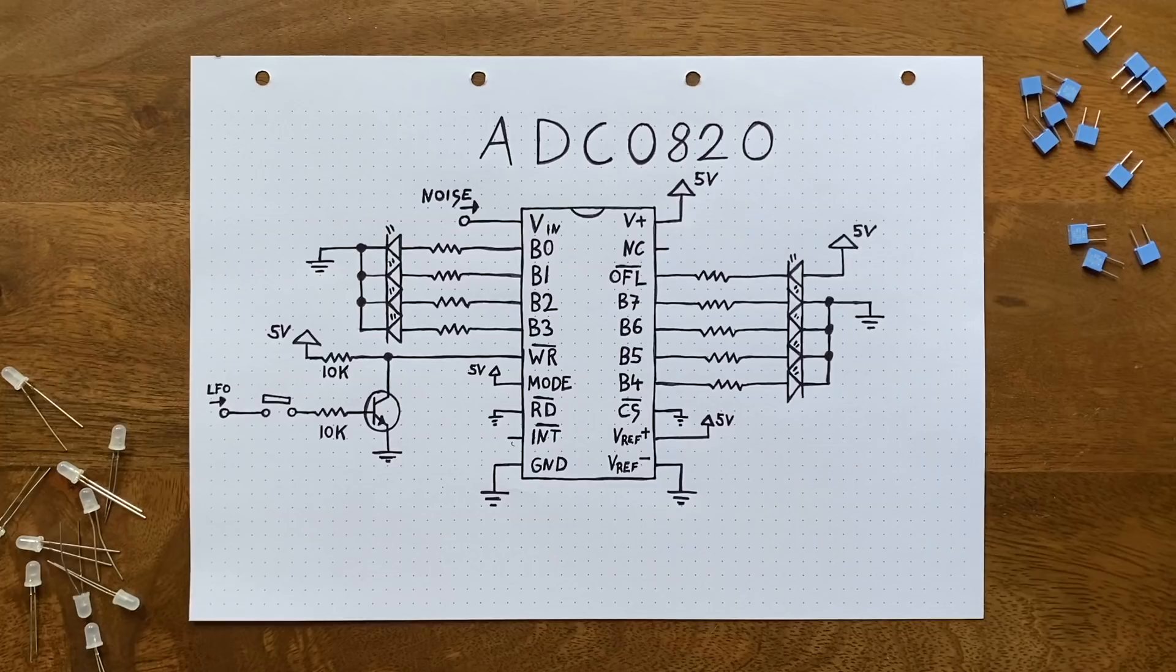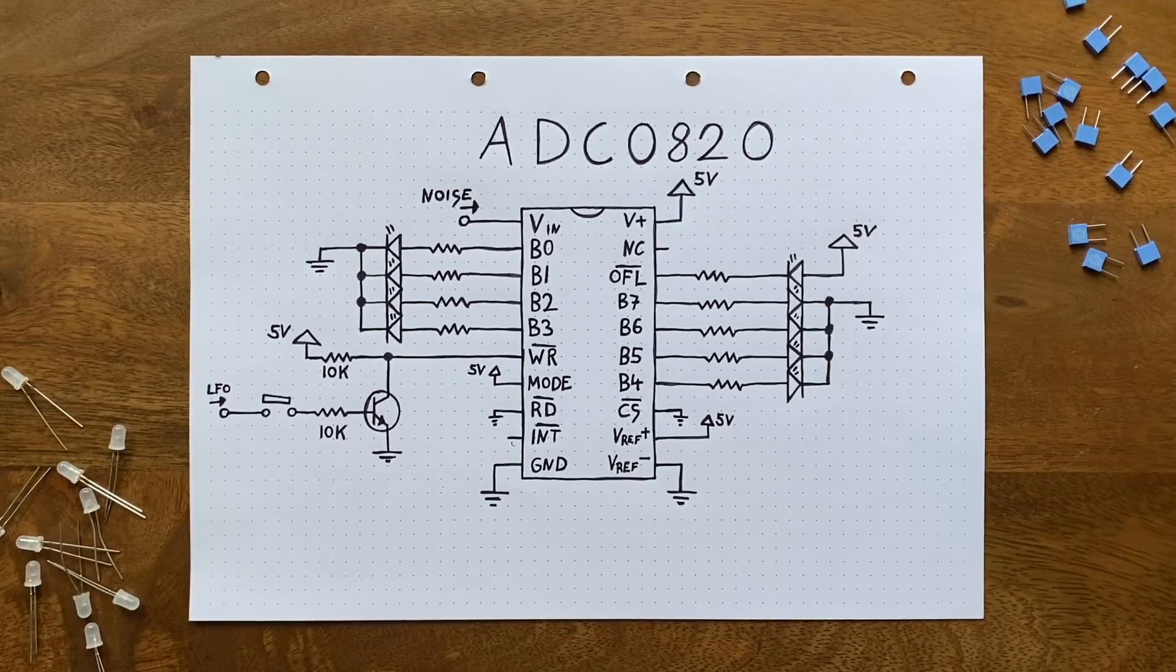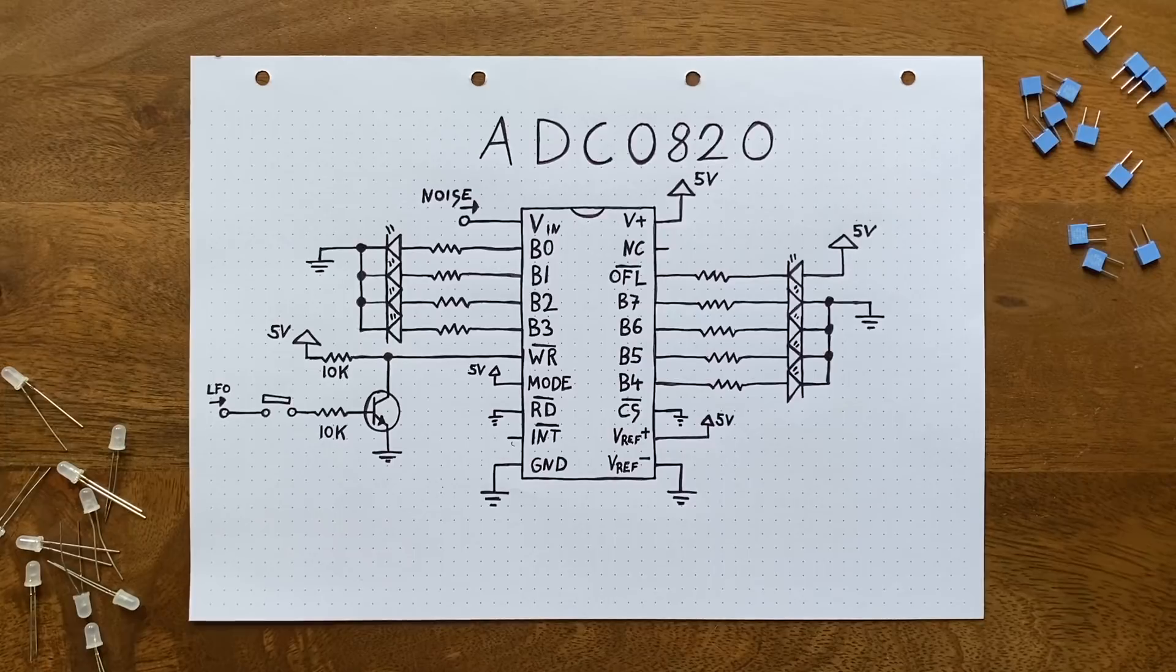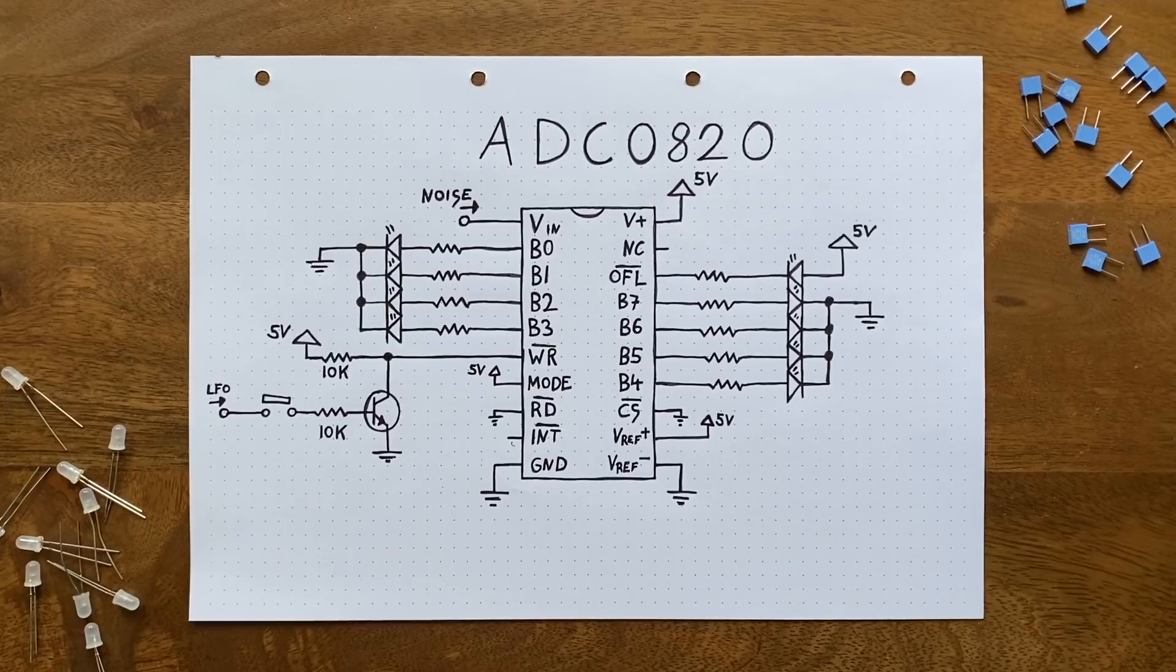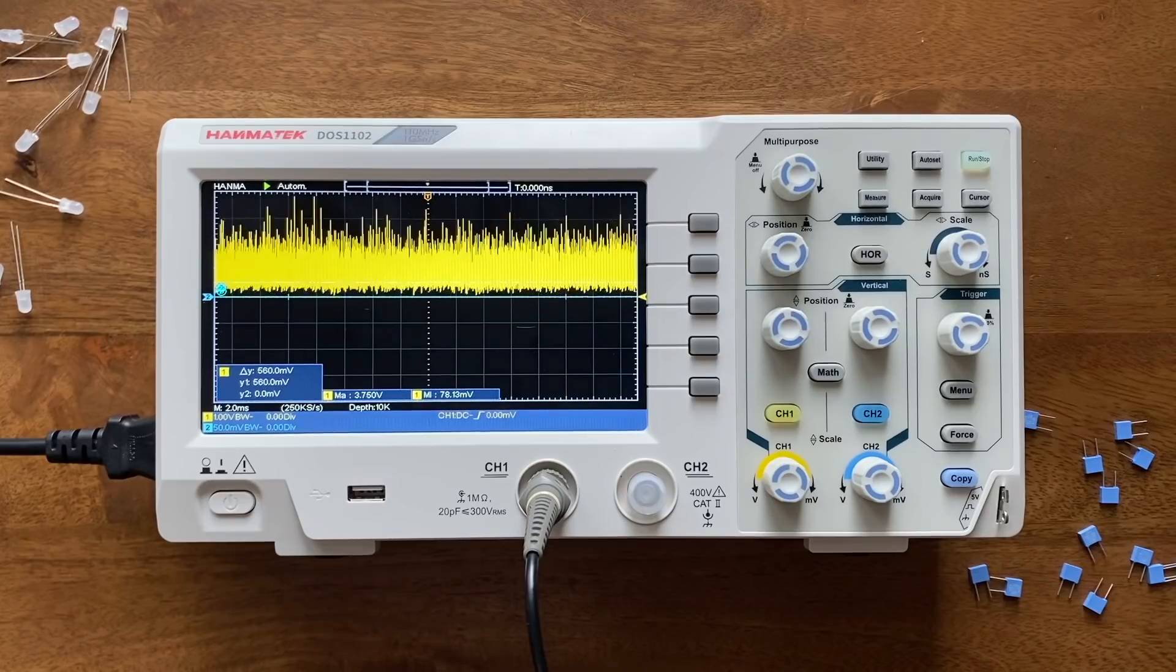So what next? To extract some sort of information from this chaos, we'll use an old pal that you might have seen in one of my very first videos. The ADC-0820. This is an 8-bit analog-to-digital converter that's able to transform our noise into binary numbers. How does this work?